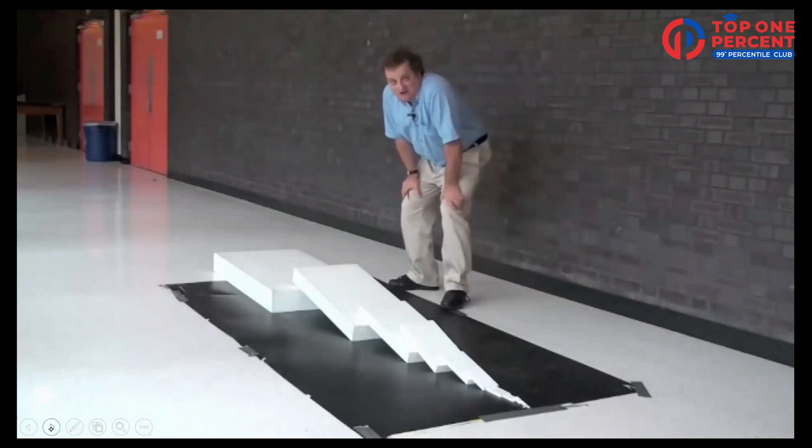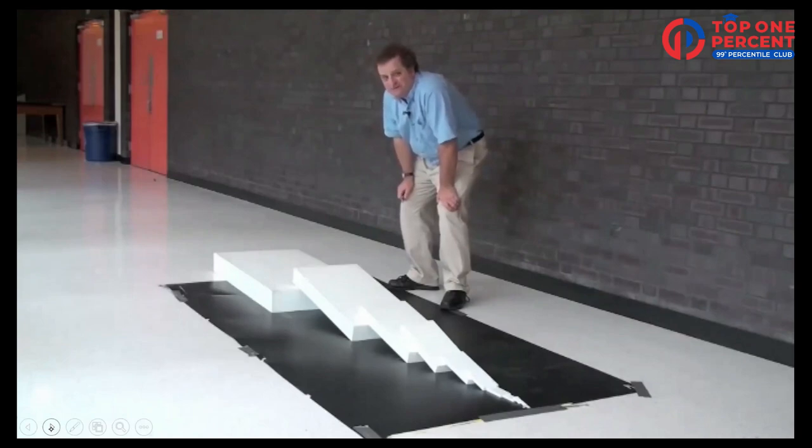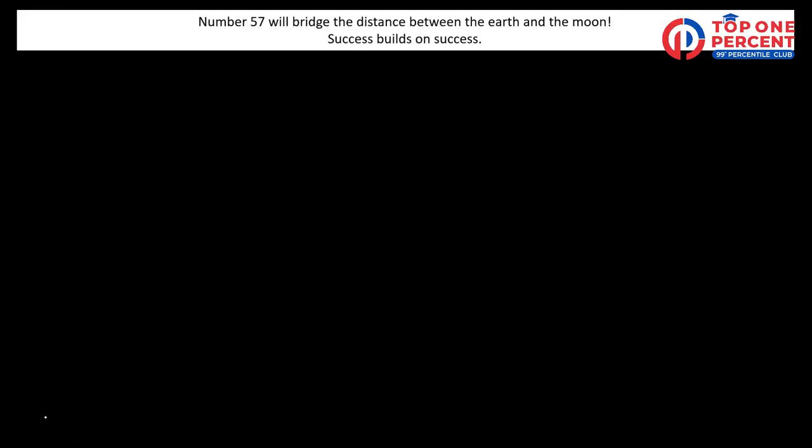That was 13 dominoes. If I had 29 dominoes, the last domino would be as tall as the Empire State Building. Things build on each other. Success builds on success. And that's why, and it's also said, number 57 will bridge the distance from the earth and the moon.